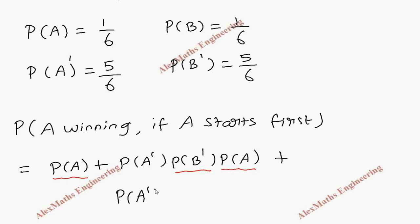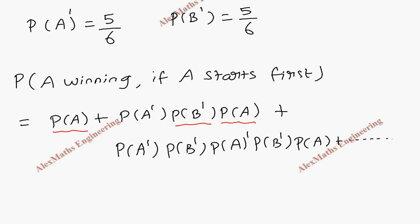Or what can happen is when A starts, he will not win, that is he will not get 6, then B will get a chance—he should not get 6—then A will get a chance, again he will not get 6, then B will get a chance, again he will not get 6, then A gets a chance and gets 6 and wins. Like this, the game keeps going. This indicates in the first trial A wins, this indicates in the second trial A wins, this indicates in the third trial A wins.